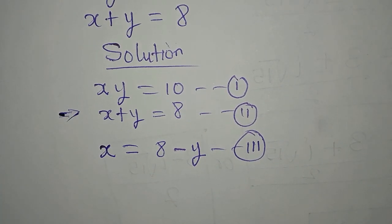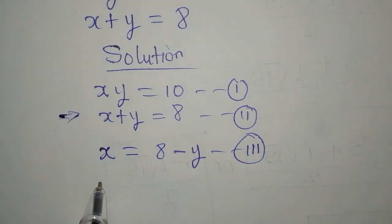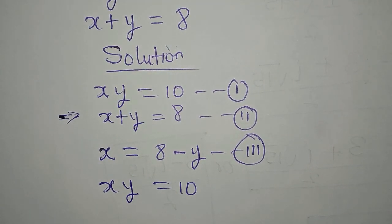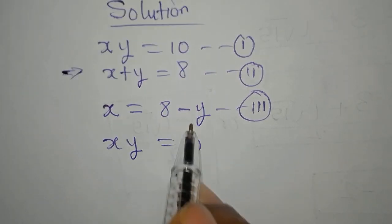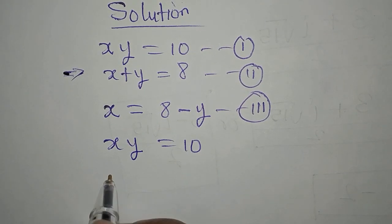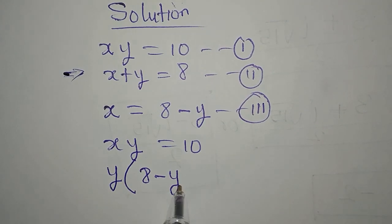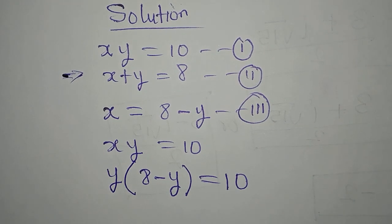Because it is equation 2, copy down equation 1 and put in the value of x. So we're going to have x times y equals 10 — this is our equation 1. Now, in place of x, I'm going to write all of this. So I write y first, then in place of x I write 8 minus y. Then everything is equal to 0.